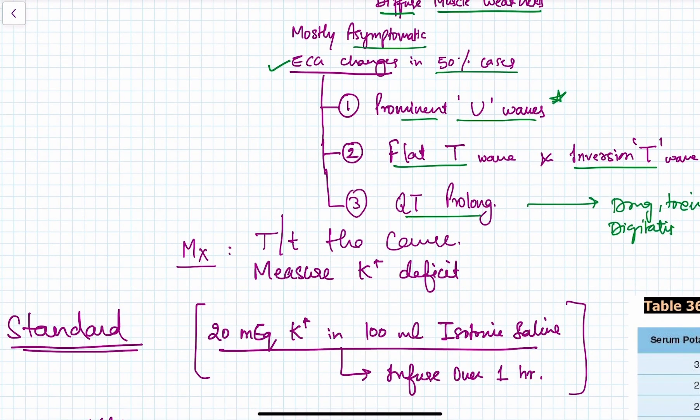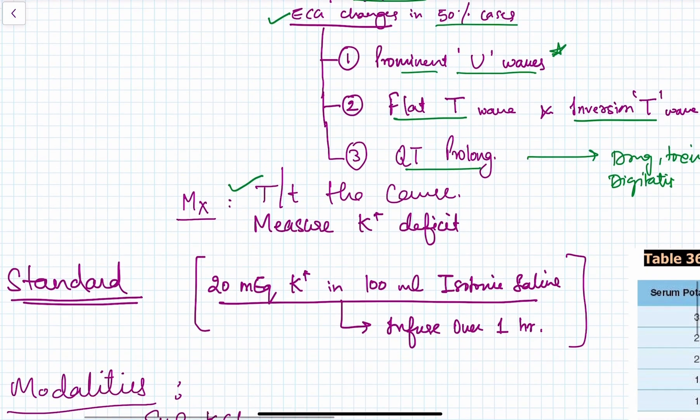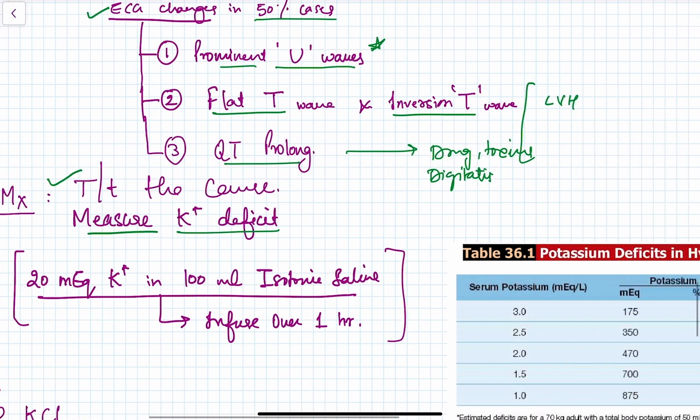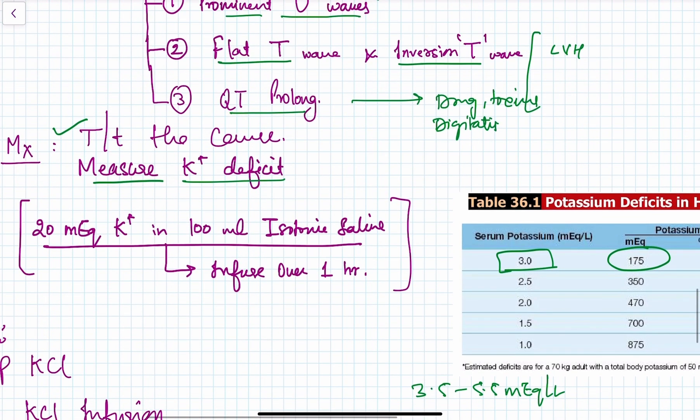For management, we treat the cause first. For example, if the cause is transcellular shift due to hypothermia, we rewarm the patient. We check the major potassium deficit from normal. If it's 3 mEq/L and the normal range is 3.5 to 5.5 mEq/L, the approximate potassium deficit is 175 mEq.